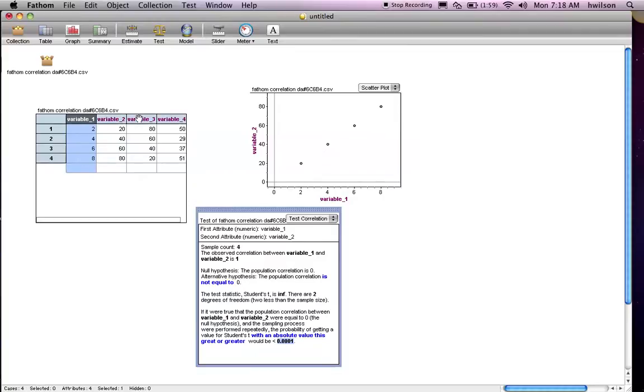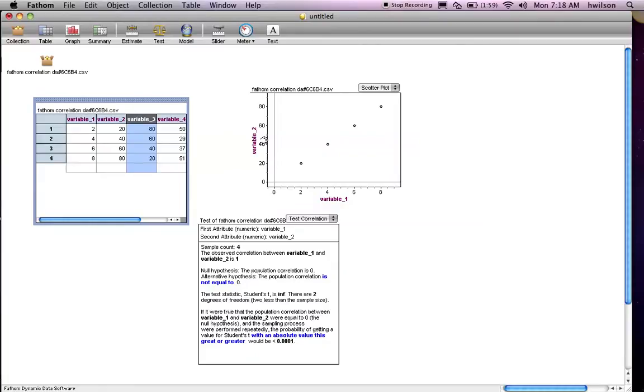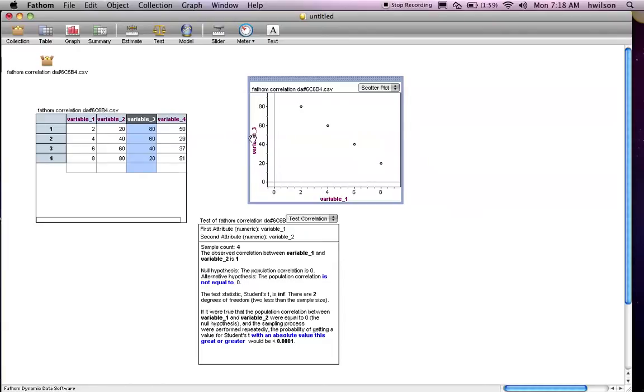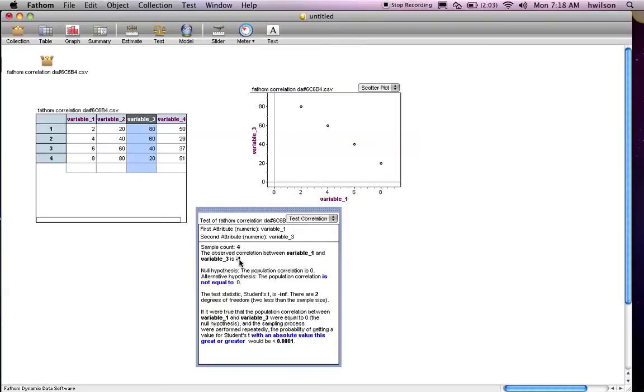Now let's look at the negative correlation. So we're going to select variable 3. Just remind you what it looks like. And then let's drag it to the test. Now that value changes. Notice, now the value is negative 1. So again, this is the highest negative value that you can have for correlation. So it appears that this data is negatively correlated. So as you increase variable 1, variable 3 decreases. And again, very low probability of it being explained by chance, less than 0.0001.